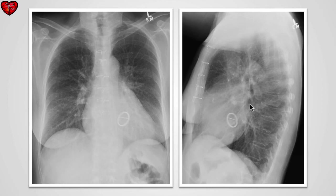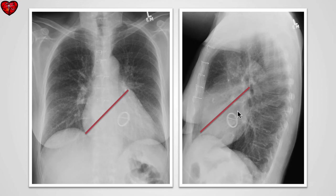In this case, we see a mechanical valve. Again, applying the same two lines, we can identify that this valve lies inferior and to the left of the line on the PA and inferior to the line on the lateral, and we can confidently state that this is the mitral valve.